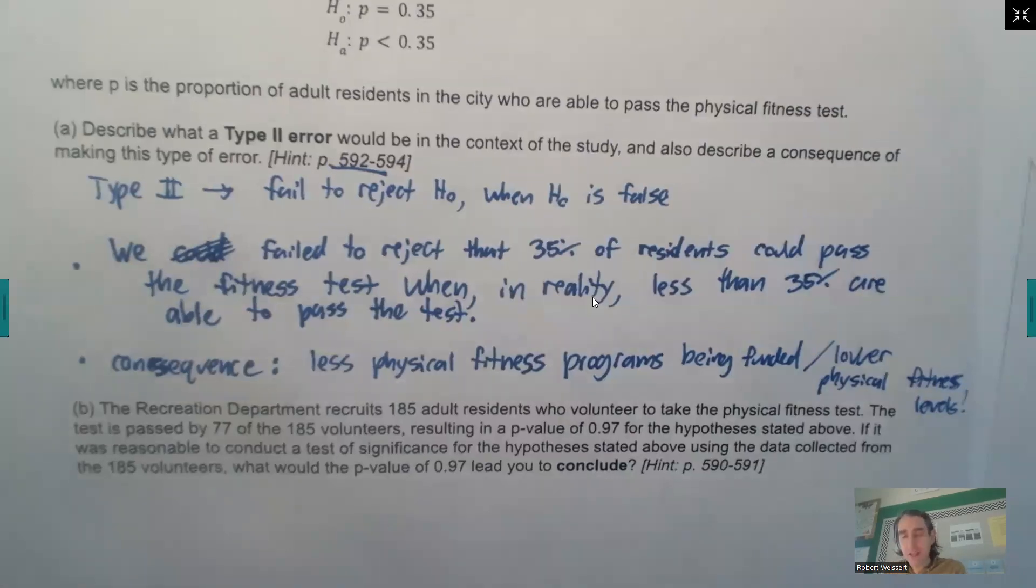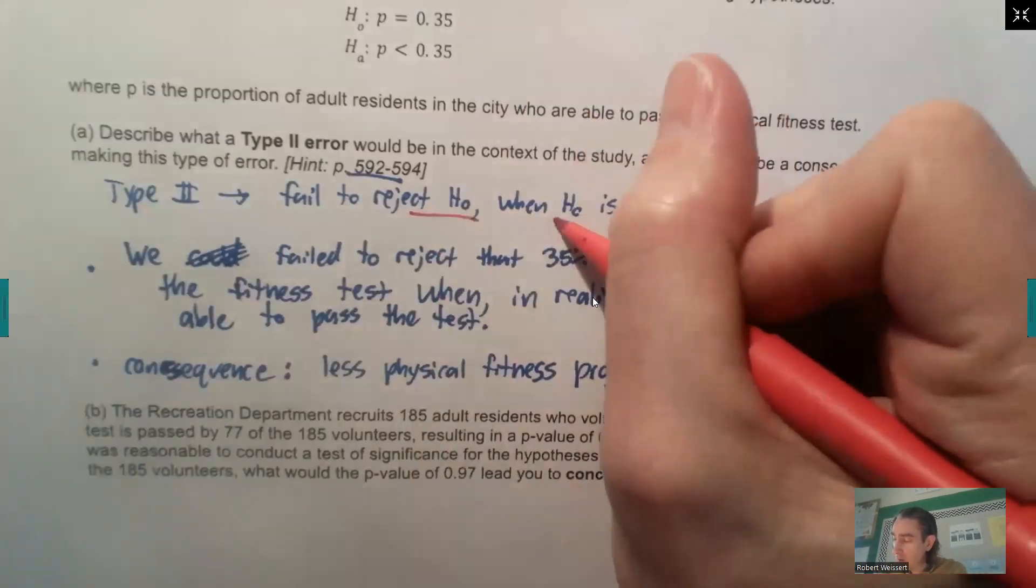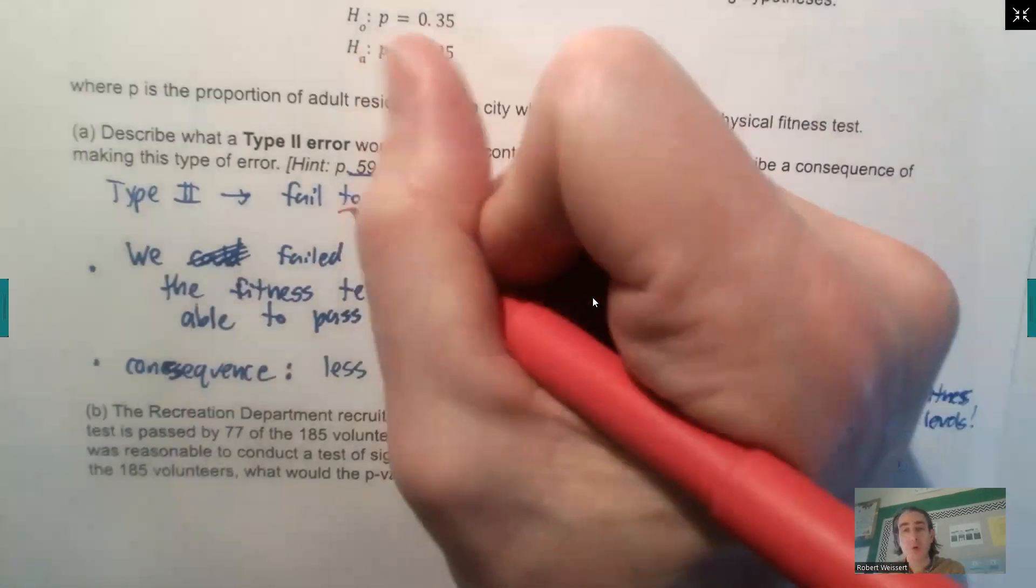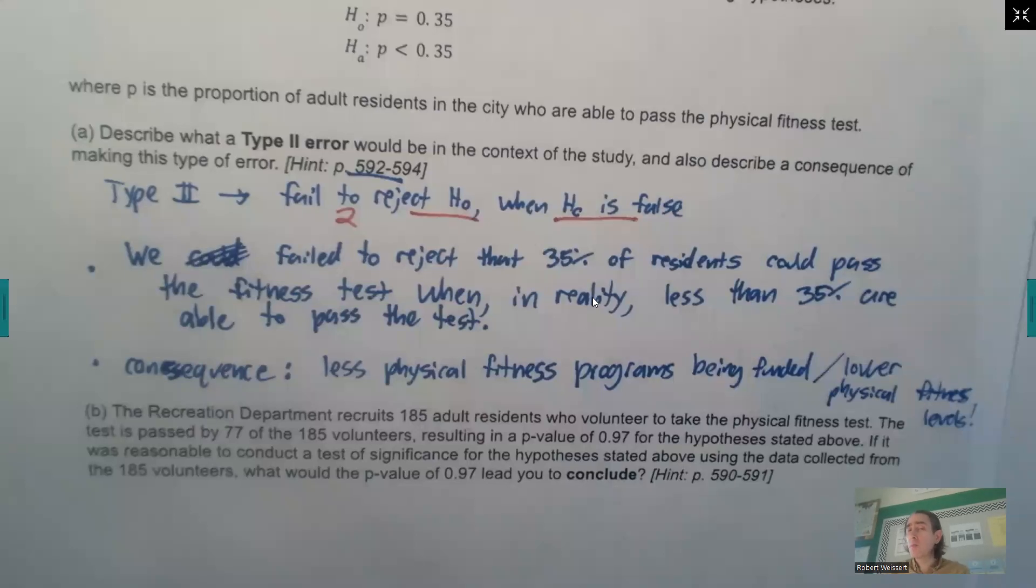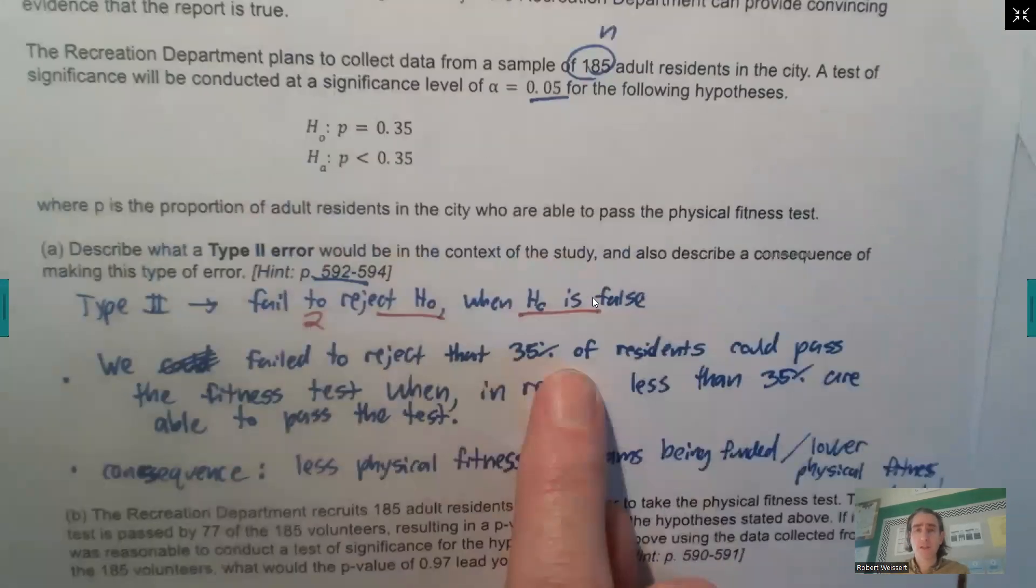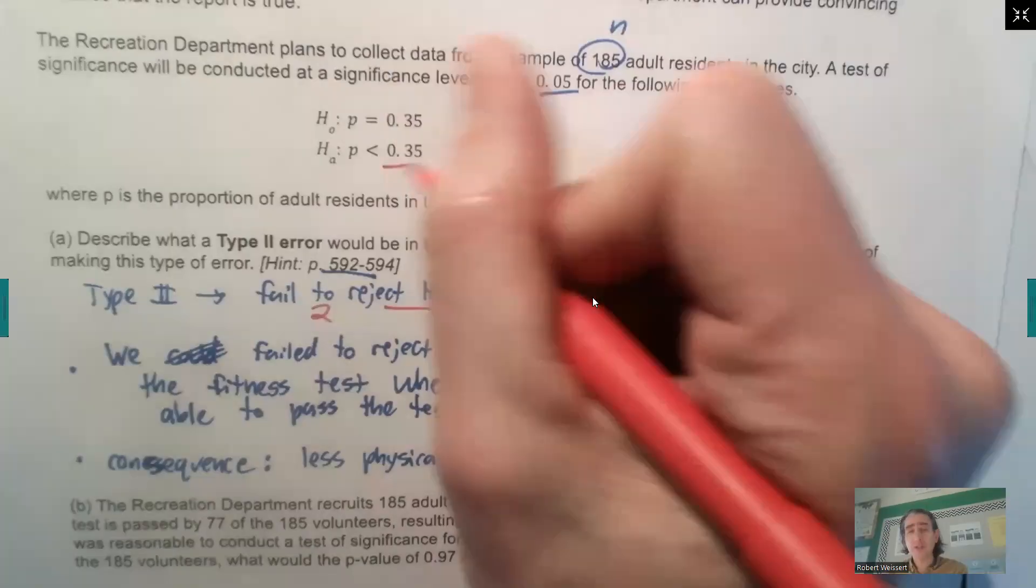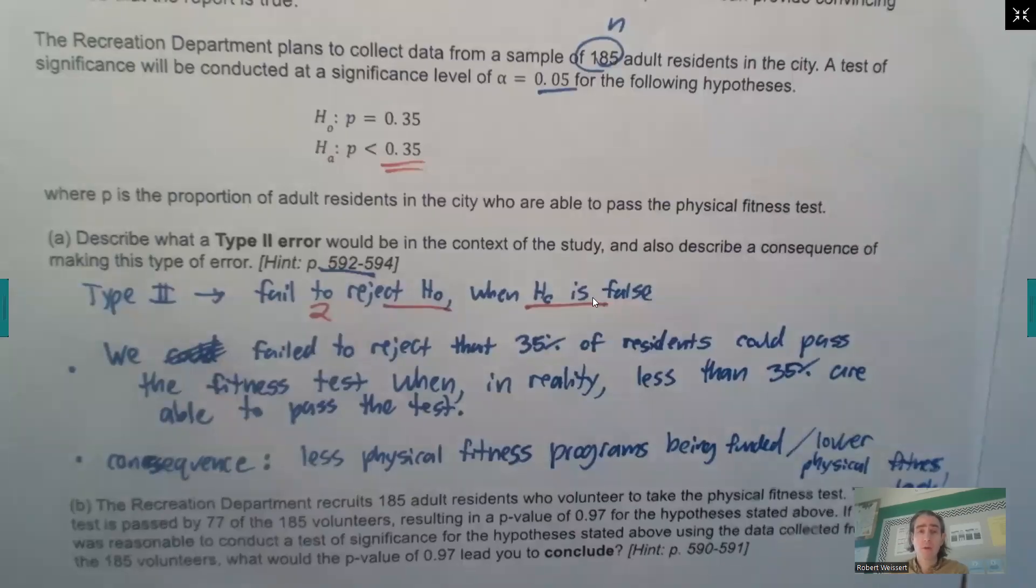Okay. In this study, type 2, well, any type 2 error is when you fail to reject the null when the null is actually false. So we fail to reject the null, but the null is actually false, meaning that in this study, we fail to reject that 35% of residents could pass the fitness test when in reality less than 35% are able to pass the test.